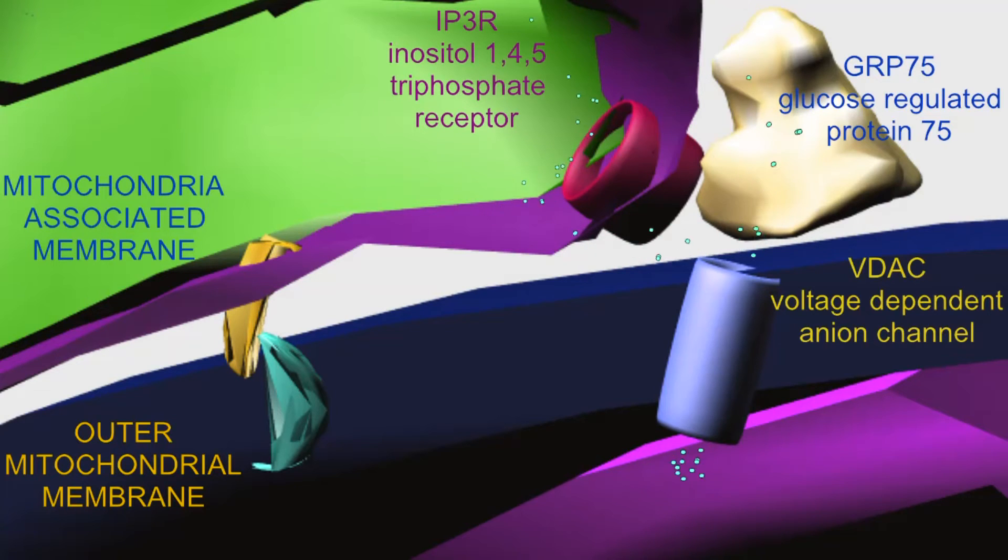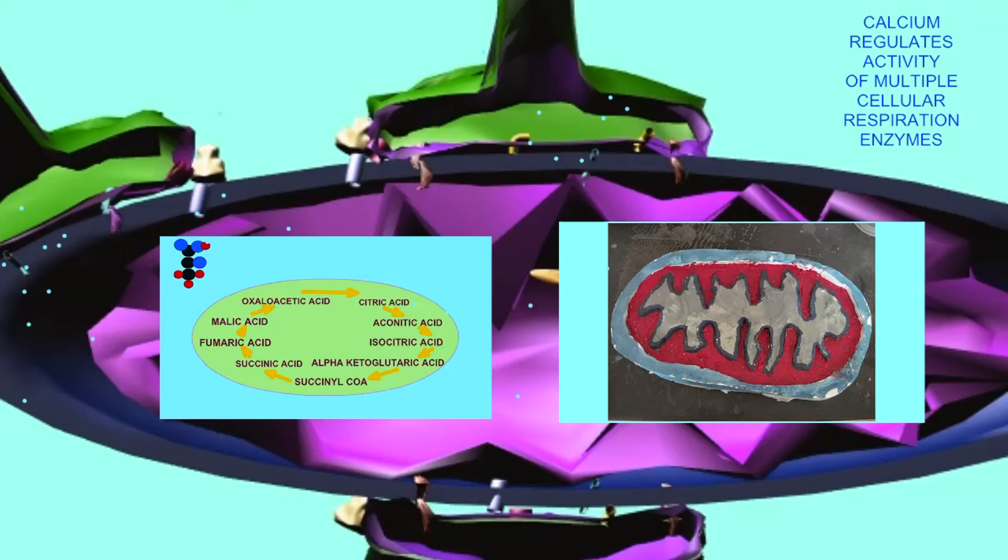Calcium signaling regulates many aspects of cellular physiology. Given that the endoplasmic reticulum is the cell's major store of calcium, and the mitochondria are one of the major cell effectors for calcium levels, both for ATP production and also with an excess of calcium, even programmed cell death, the mitochondria-associated membranes contain many proteins involved in the transport of calcium.